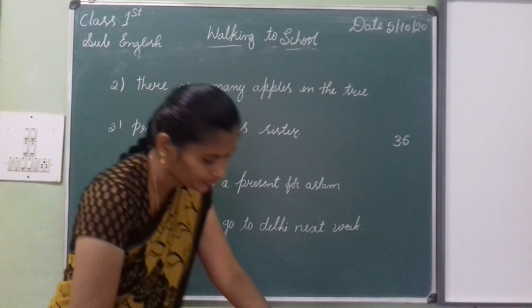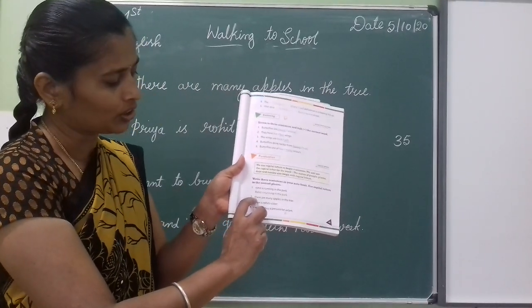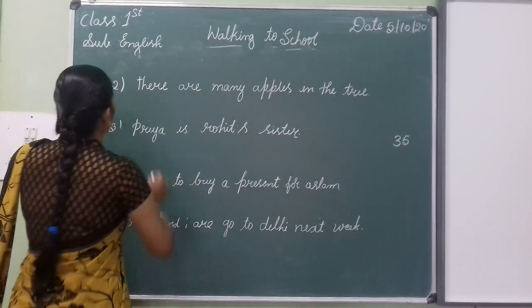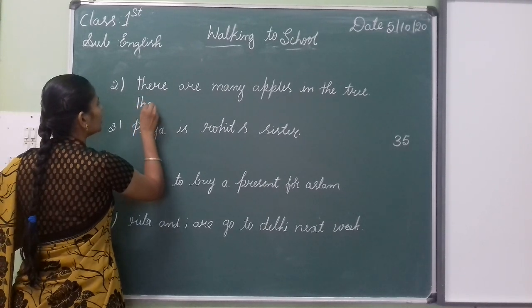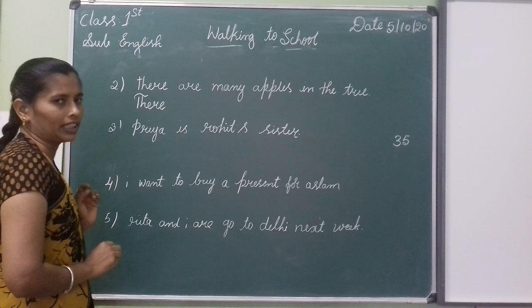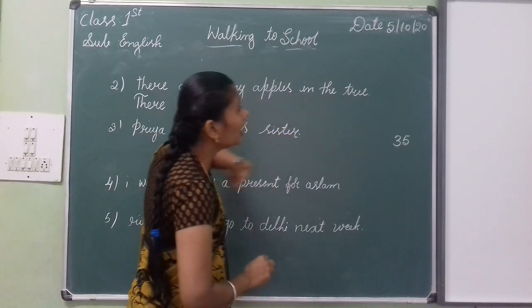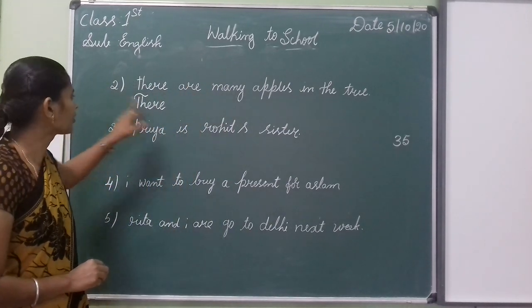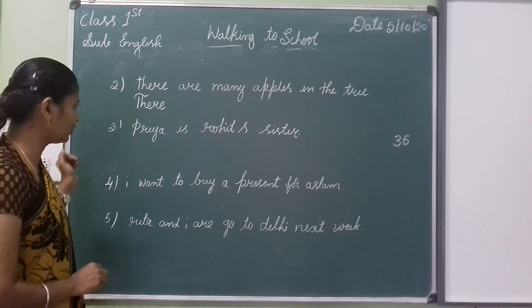Capital letter T. Write it: T-H-E-R-E. There are many apples in the tree. T should be a capital letter.